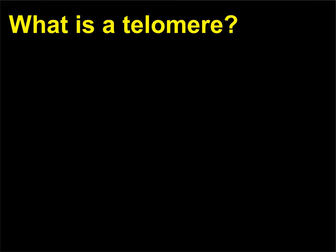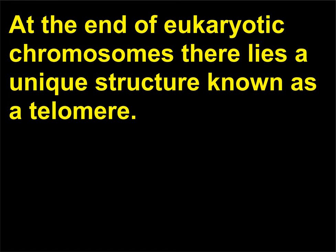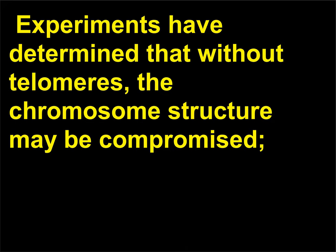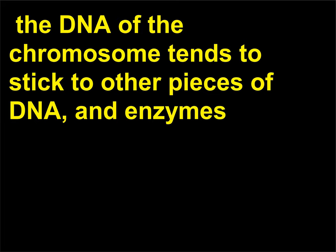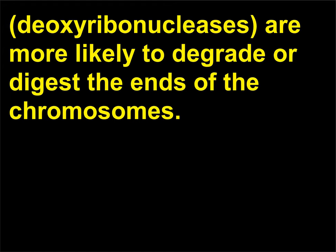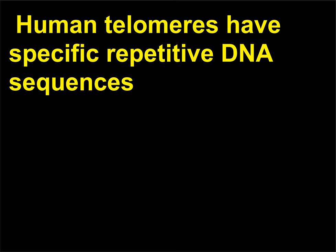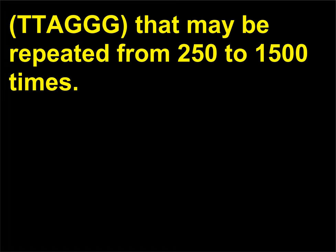What is a telomere? At the end of eukaryotic chromosomes there lies a unique structure known as a telomere. Experiments have determined that without telomeres, the chromosome structure may be compromised. The DNA of the chromosome tends to stick to other pieces of DNA, and enzymes called deoxyribonucleases are more likely to degrade or digest the ends of the chromosomes. Human telomeres have specific repetitive DNA sequences (TTAGGG) that may be repeated from 250 to 1,500 times.